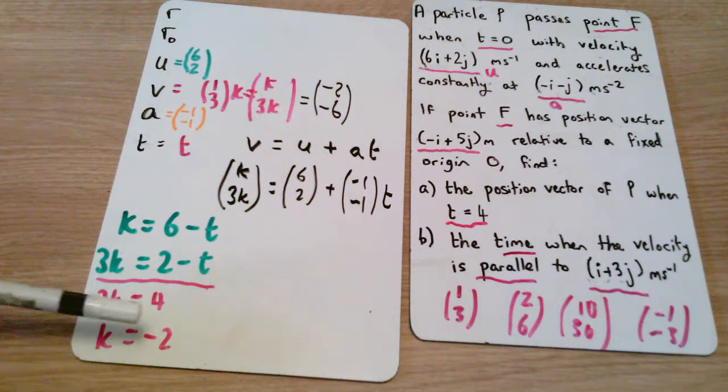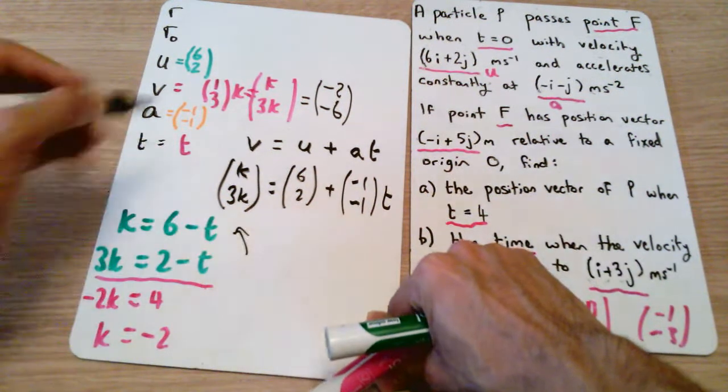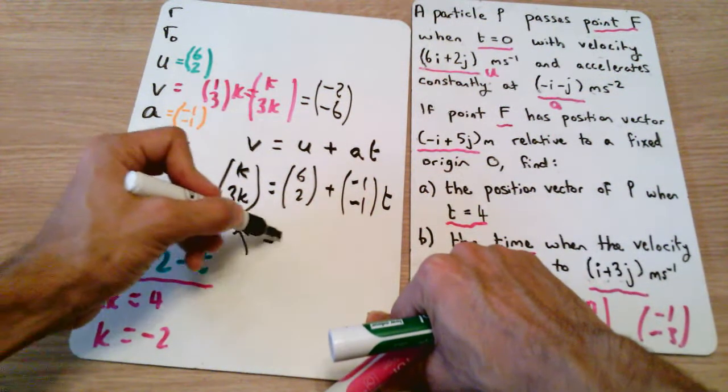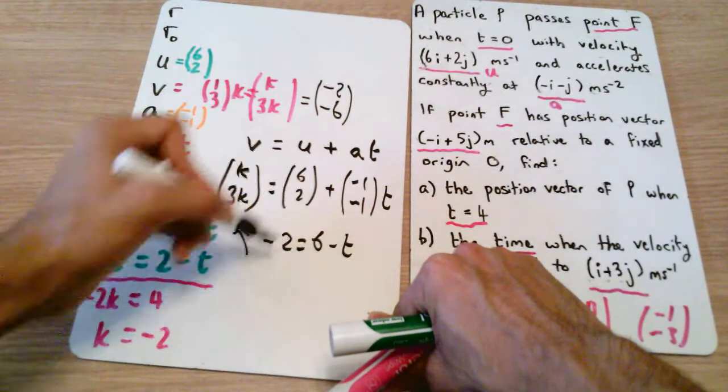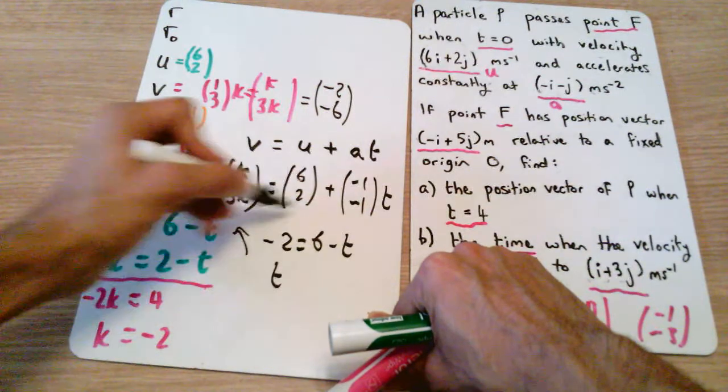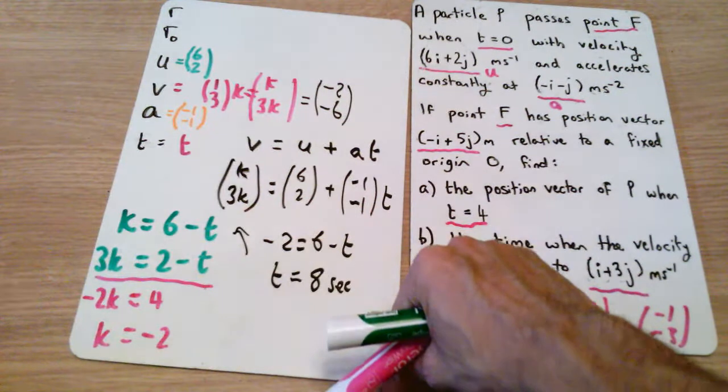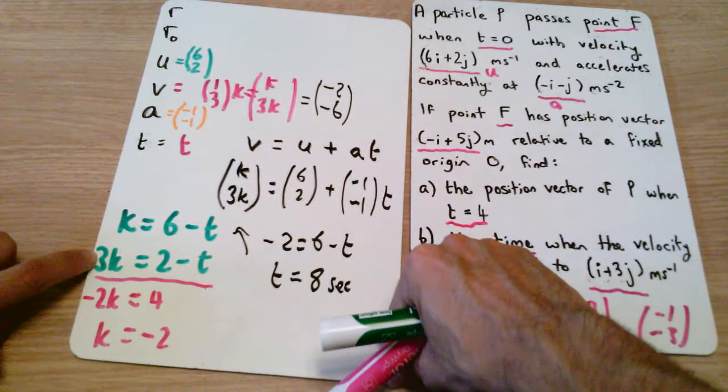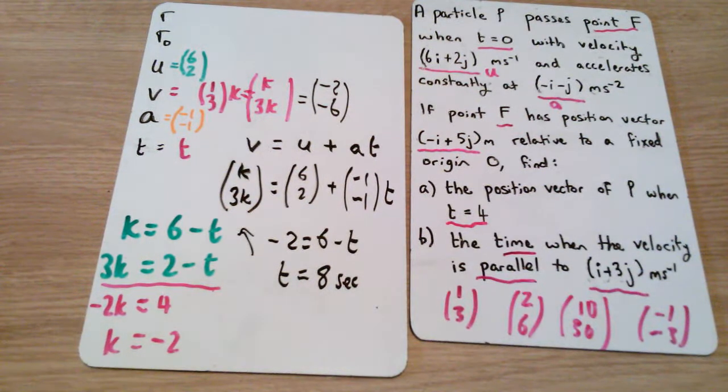But because it's a simultaneous equation, to work out the value of t, we simply substitute back in. We can say that minus 2 is equal to 6 minus t. Therefore, t is equal to 8 seconds. Let's check in the other one. 3 times minus 2 is minus 6. 2 minus 8 is minus 6. Both equations work. We have our value here, t equals 8.